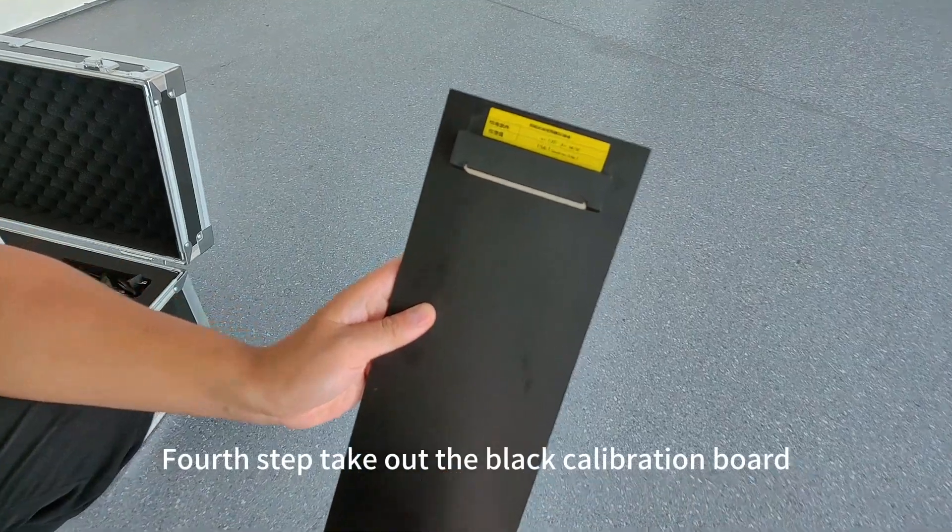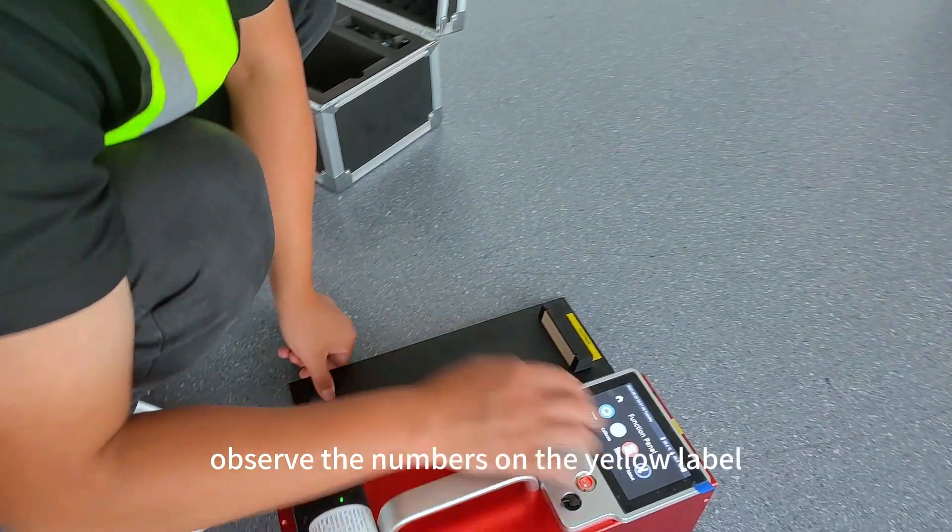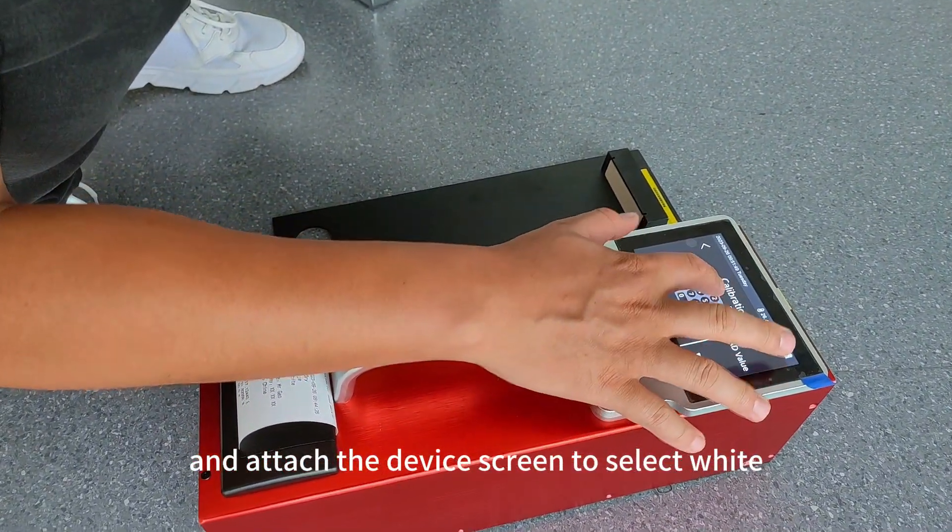Fourth step, take out the black calibration board, observe the numbers on the yellow label, and touch the device screen to select white.